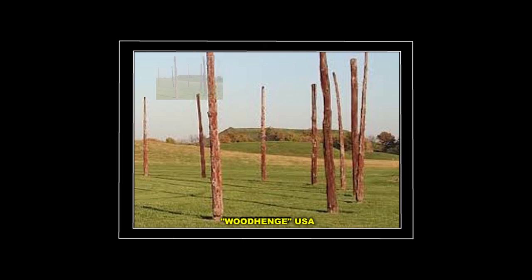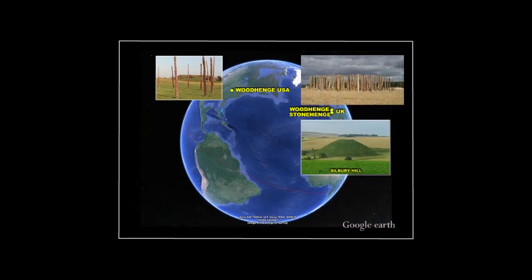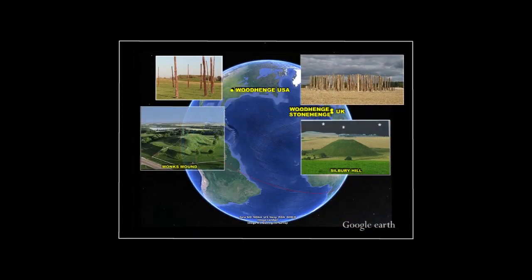This site is also known as Woodhenge, because it too was concentrically configured in the exact same way as Woodhenge of the United Kingdom, and also because it too was in close proximity to a series of nearby earthen mounds, the largest of this group being known today as Monk's Mound, in what is now Cahokia, Illinois, in the United States.